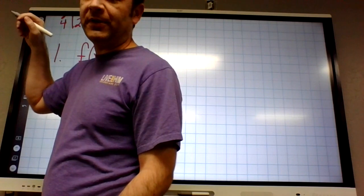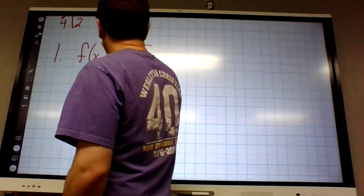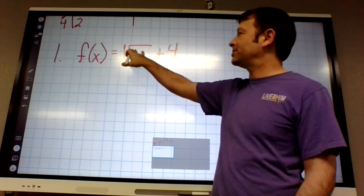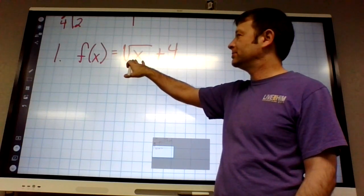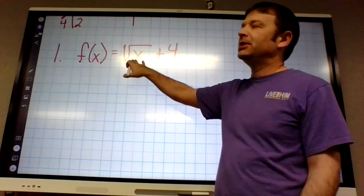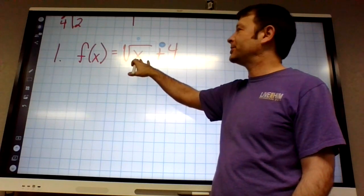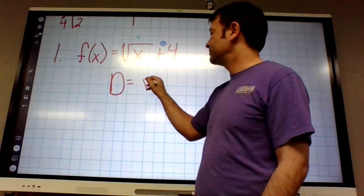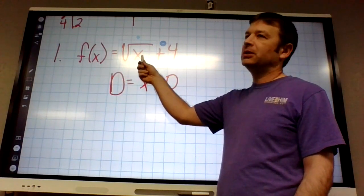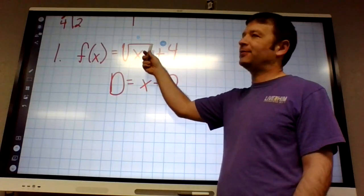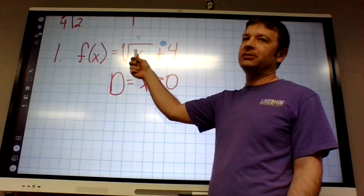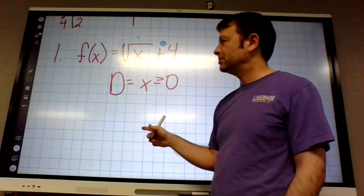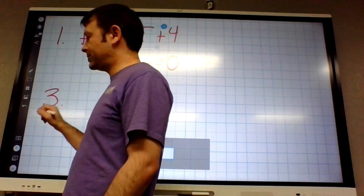Number one says find the domain of the function. The only thing we have to look at is we can't let anything inside the square root be negative. So what can x be? Anything bigger than or equal to zero. This four outside doesn't matter — I just can't have a square root of a negative. So zero or bigger is going to work. That's short and sweet.